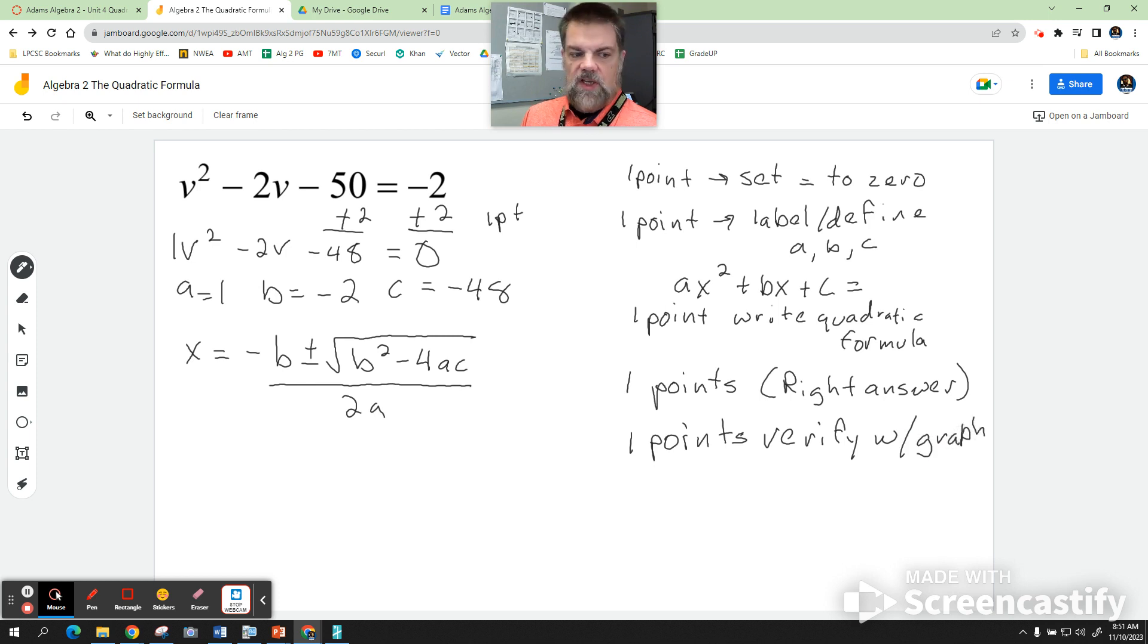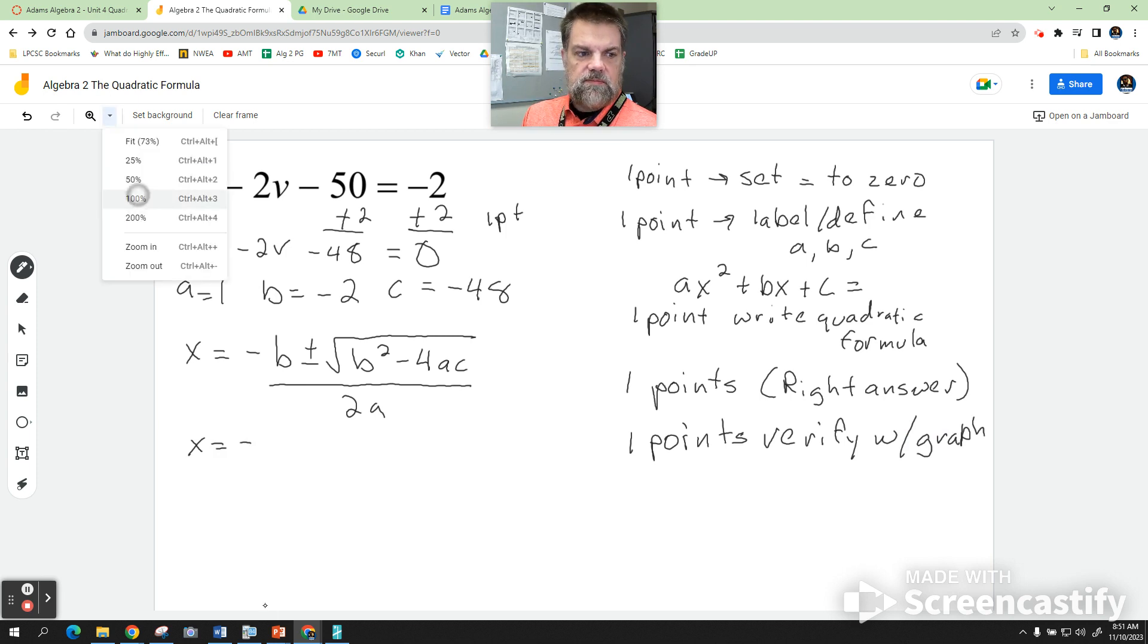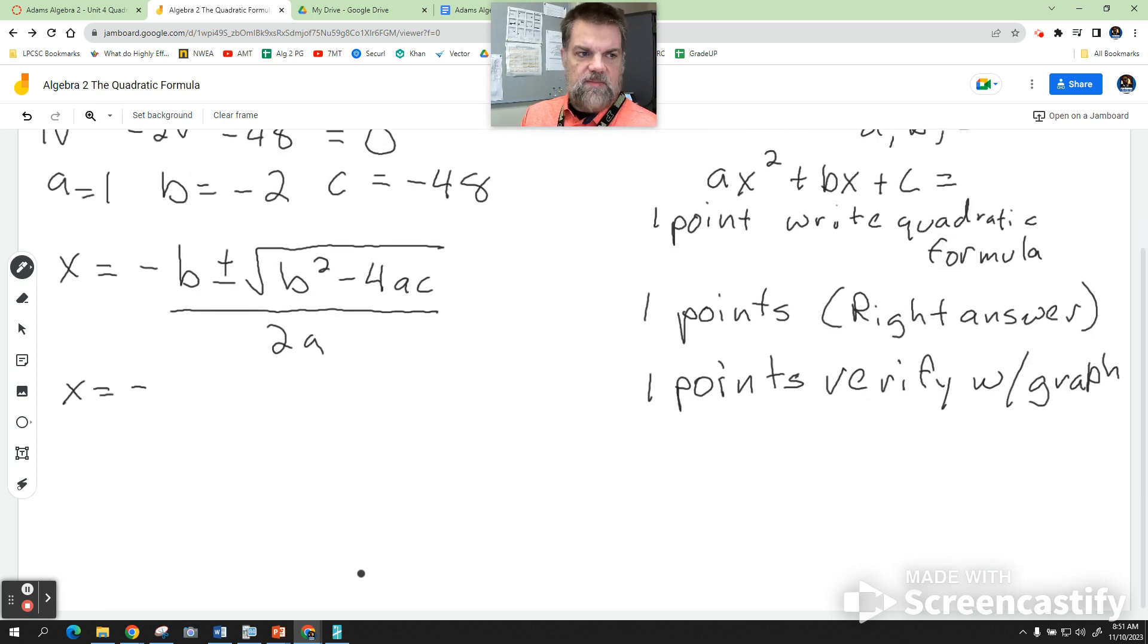Now the algebra part is the hard part here. So I'm going to say x is equal to minus what is b? Negative 2. So wherever there's a b, I'm going to plug in negative 2. So this will become negative 2 plus or minus the square root of negative 2 squared minus 4 times a, which is 1, times c, which is negative 48.